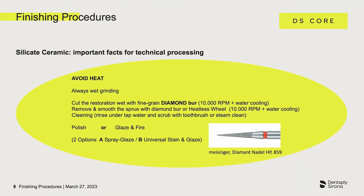Silicate ceramics are heat sensitive and are always wet ground. After the grinding process in the prime mill is finished, these materials continue to be processed with water cooling if possible. Fine grit diamonds should be used and the number of rotations should not exceed 10,000 rotations per minute. The tapping point is levelled with moderate contact pressure using a fine grit diamond under water cooling, and the surface of the crown is smoothened and finished. Afterwards, the workpiece is cleaned with a steam jet device.